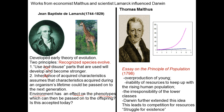Thomas Malthus was an economist, and at the time of Darwin there was a great industrial revolution with a growing gap between rich and poor. Malthus said poverty exists because people have too many children, increasing the human population, and there are limits to environmental resources — limited jobs, limited food — leading to a struggle for existence. Darwin took that idea of the struggle for existence and applied it to all living things.